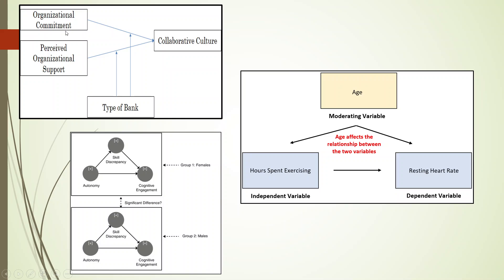Another example: organizational commitment is affected by collaborative culture, and organizational support is also affected by collaborative culture. But this relationship is also dependent on the type of bank — public or private. Similarly, autonomy affecting cognitive engagement, and autonomy affecting skill discrepancy which then affects cognitive engagement — are these models significantly different for males versus females? Also, hours spent exercising and its effect on resting heart rate can be moderated by the age or gender of the patient. Therefore we are introducing the moderating variable.